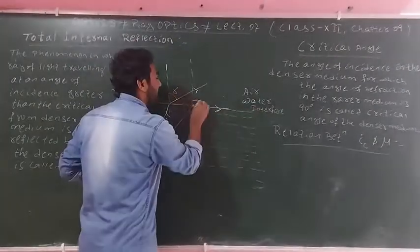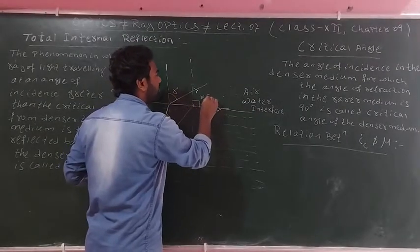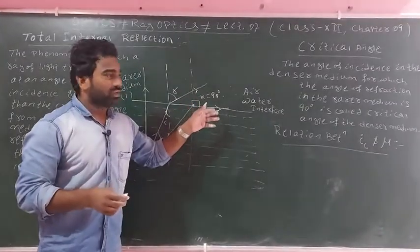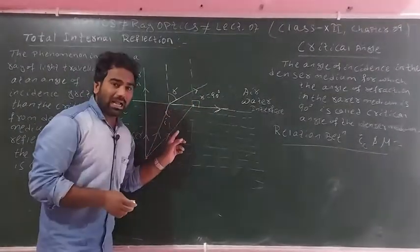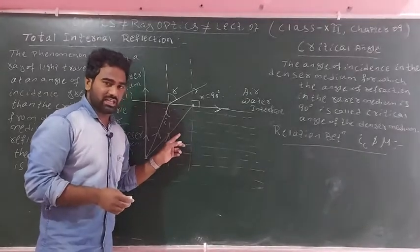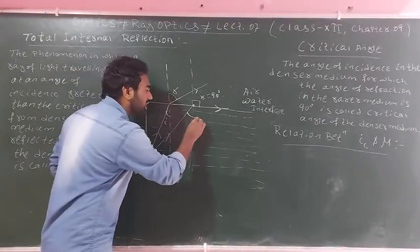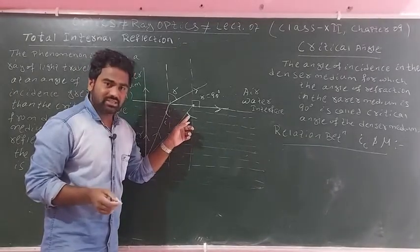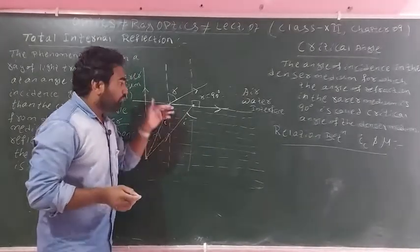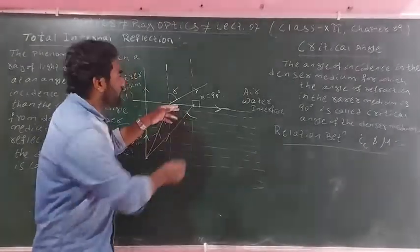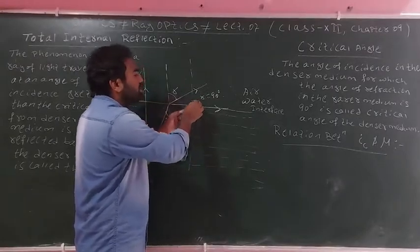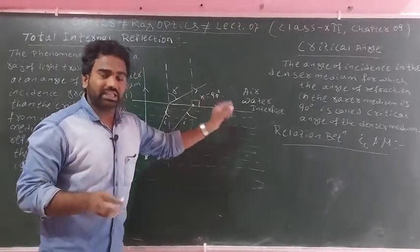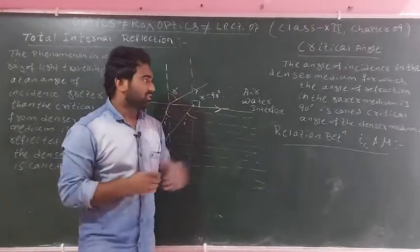When the angle of refraction becomes 90 degrees, the refracted ray travels along the interface. The angle of incidence in the denser medium for which the angle of refraction in the rarer medium is 90 degrees is called the critical angle.